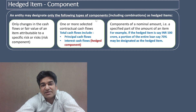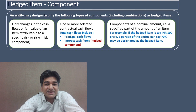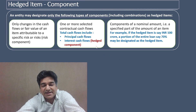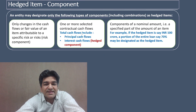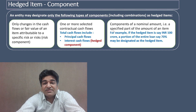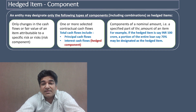Component number two: one or more selected contractual cash flows can be a component designated as a hedged item. For example, a transaction may have cash flows that include both principal cash flows and interest cash flows. Ind AS 109 says that only the interest cash flows — that is, a part or component of the total cash flows — can be designated as the hedged item. It is not necessary that all the cash flows have to be designated.